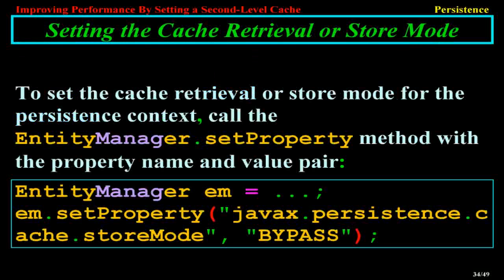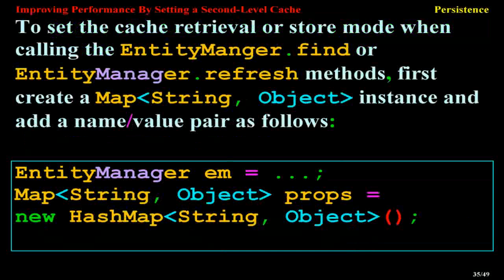Setting the Cache Retrieval or Store Mode. To set the cache retrieval or store mode for the persistence context, call the EntityManager.setProperty method with the property name and value pair: EntityManager m = ...; m.setProperty(javax.persistence.cache.storeMode, BYPASS).